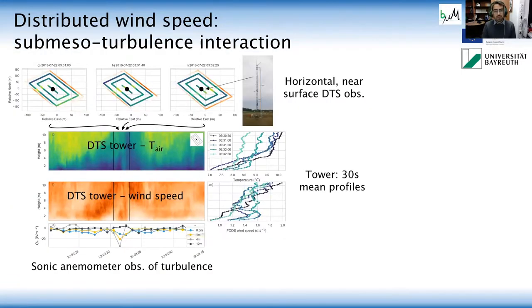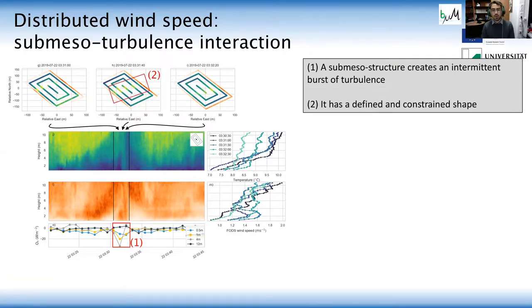And so the first thing to point out is that we have this cool, interesting sub-meso generated burst of intermittent turbulence. This is exactly the problem Christoph highlighted is that we don't know what the driver is behind this. However, we see with the DTS that we have this defined and constrained shape. It's about 60 meters across and it's less than six meters tall. And it moves across the field in about two minutes with a really slow velocity.